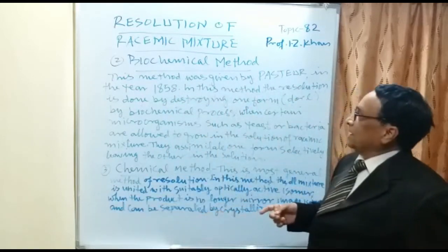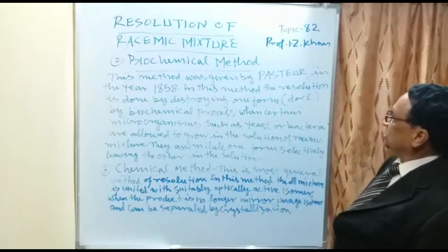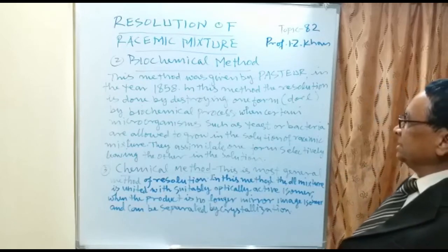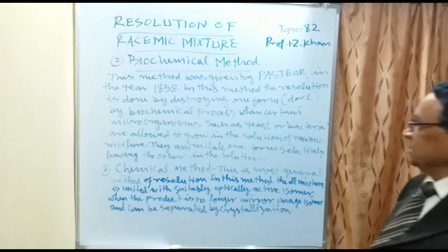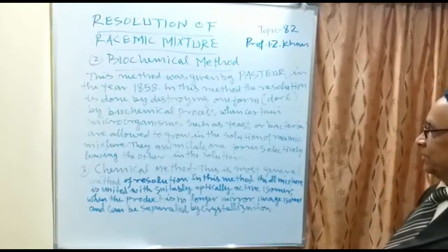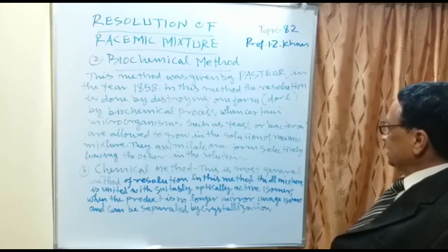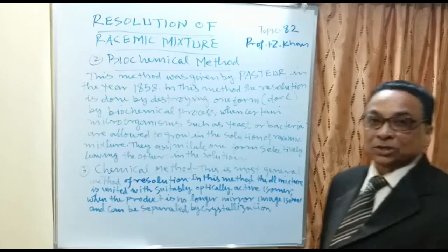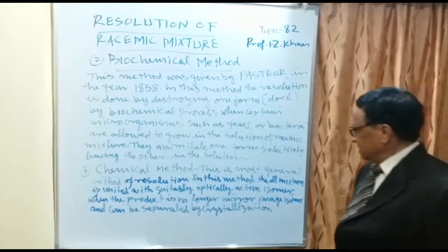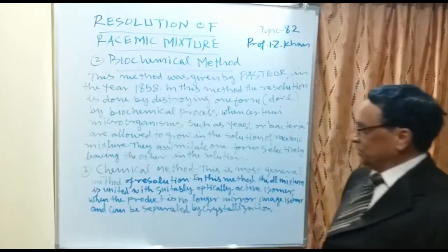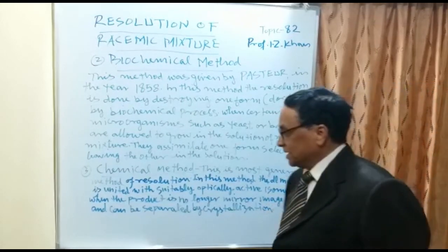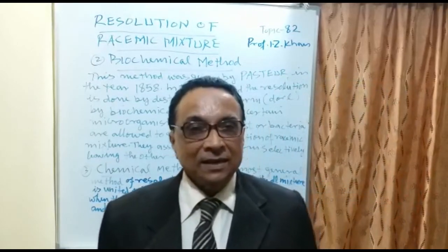The biochemical method was given by Pasteur in 1858. In this method, resolution is done by destroying one form — either D or L — by a biochemical process. Certain micro-organisms such as yeast or bacteria, when allowed to grow in the solution of the racemic mixture, assimilate one form selectively, leaving the other in solution. The chemical method is the most general method of resolution: the DL mixture is reacted with a suitable optically active reagent, forming products that are no longer mirror image isomers and can then be separated by fractional crystallization.